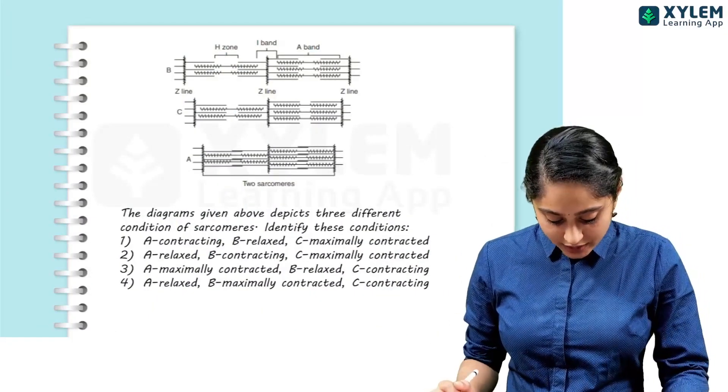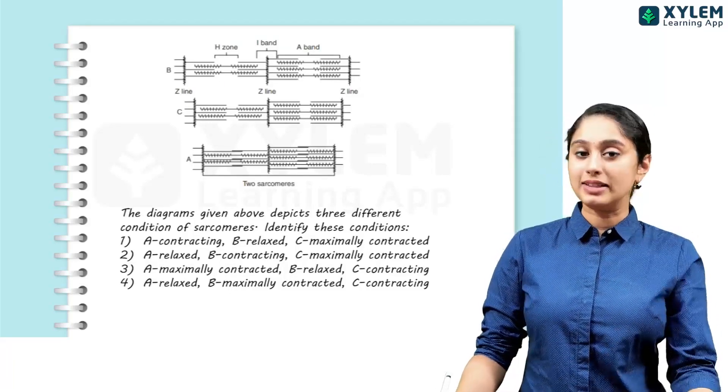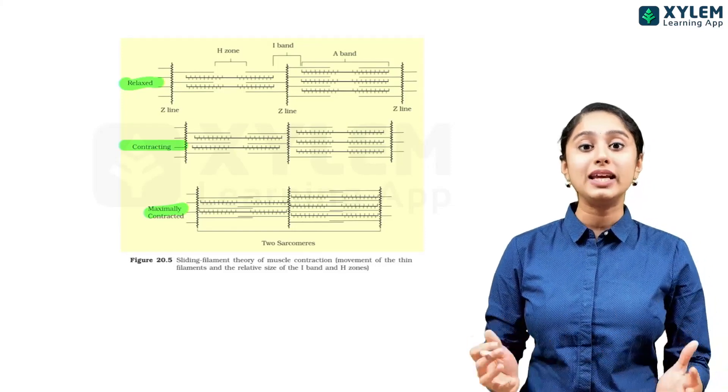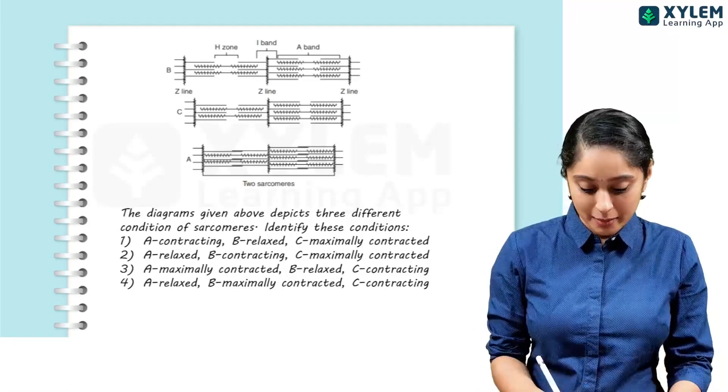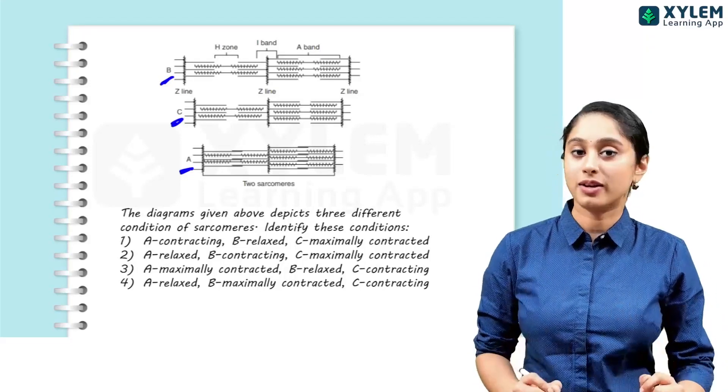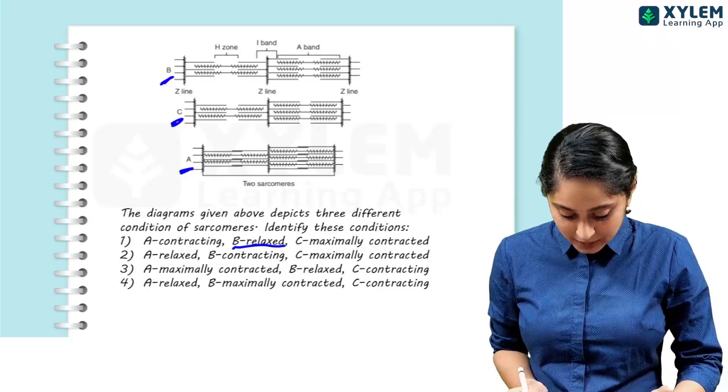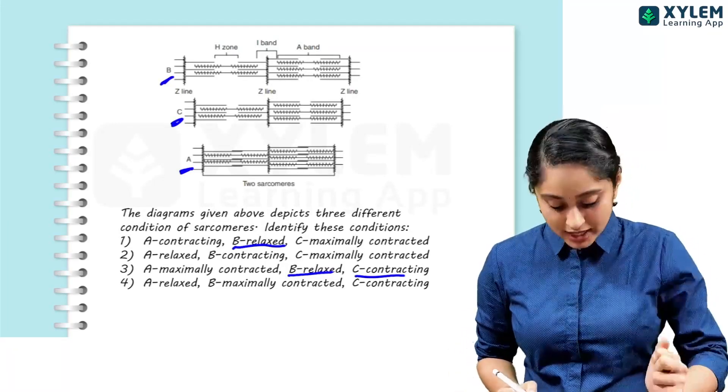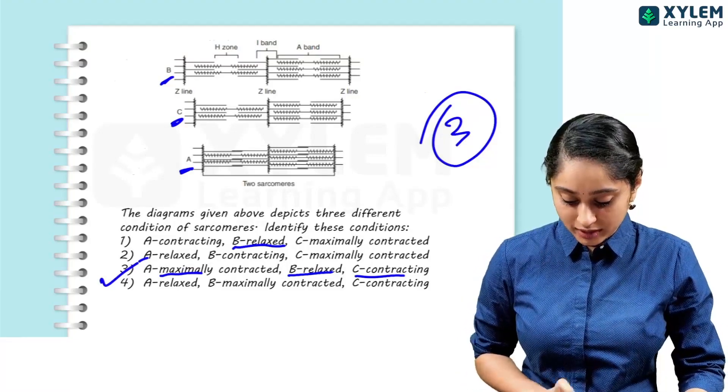The diagrams given above depict three different conditions of the sarcomeres. Identify this condition. If you know NCERT, this diagram - if you look at it, you will know that the first stage is being relaxed, that is during contraction, and then finally when it is maximally contracted. You can see here, when you look at it, you can see the order. Here B is in relaxed state, C is during the contraction, and A is when it is maximally contracted. So option 3 will be the right answer. The alphabets are very important.